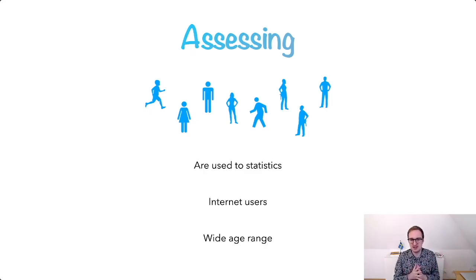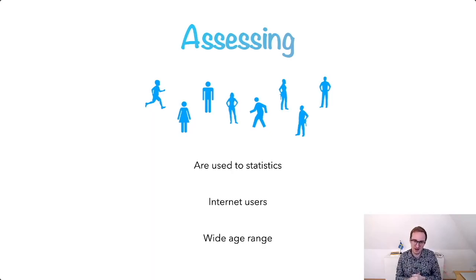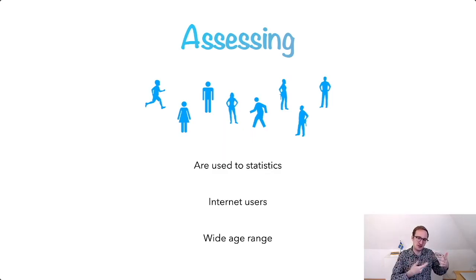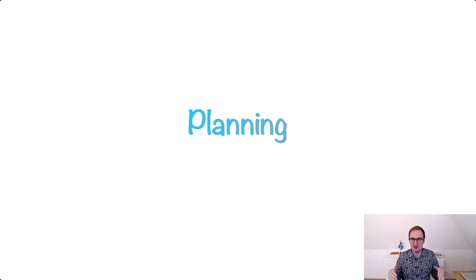Talking about the audience — this is something I always do in parallel: I look at the data, then look at the audience, then switch back. For Der Spiegel's readership, for example, they are used to statistics. They're usually internet users who know how interactive graphics work. We have a very wide age range and we want to tell our story to the older ones, but maybe a different story to the younger ones — that's usually a large challenge.